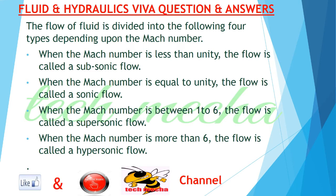When the Mach number is less than unity, the flow is called subsonic flow. When the Mach number is equal to unity, the flow is called sonic flow. When the Mach number is between 1 to 6, the flow is called supersonic flow. When the Mach number is more than 6, the flow is called hypersonic flow.